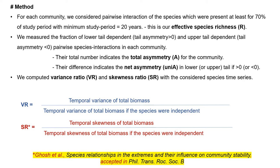We computed variance ratio and skewness ratio with the considered species time series. The variance ratio is defined as the ratio of the temporal variance of total biomass for a given community with respect to the temporal variance of total biomass if the species were independent. Similarly, the skewness ratio is the temporal skewness of total biomass scaled with respect to the temporal skewness of total biomass if the species were independent. For the skewness ratio, we would recommend you to take a look at our recently accepted paper.